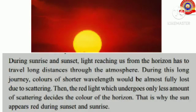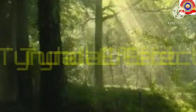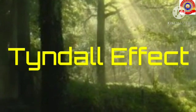Can you now guess why red color has been given to the tail lamps of vehicles and signal lights? The reason is the highest wavelength of red light. Due to its highest wavelength, red light scatters less and can travel through a long distance without any significant scattering.